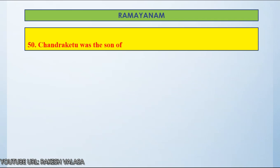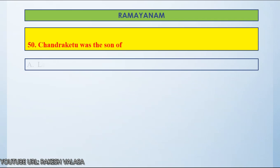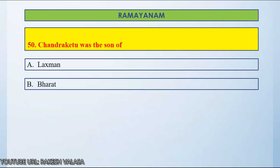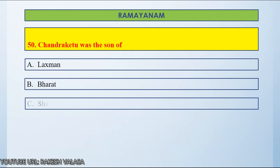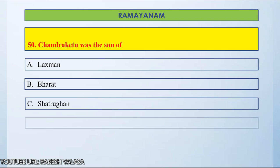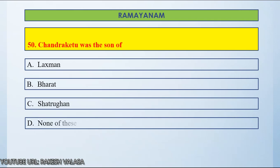Question number 50: Chandraketu was the son of — Option A, Lakshman. Option B, Bharat. Option C, Shatrughna. Option D, None of these. Let us count and start. If you know the answer, please post in the comment section.